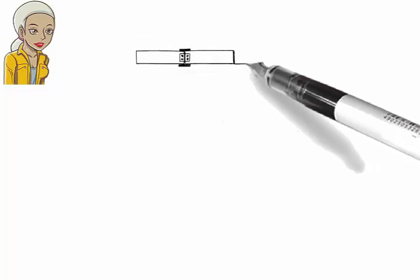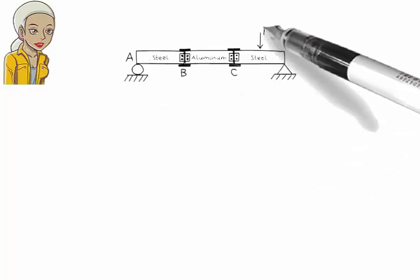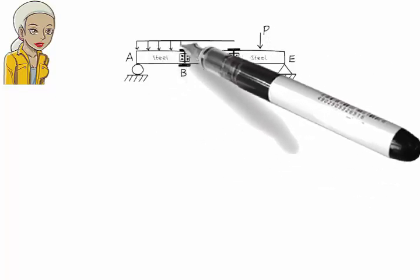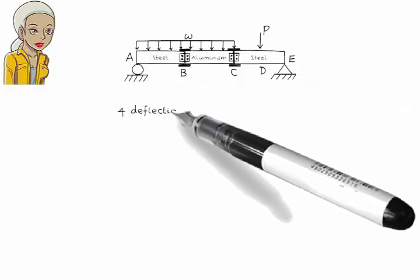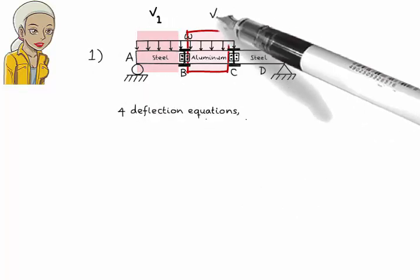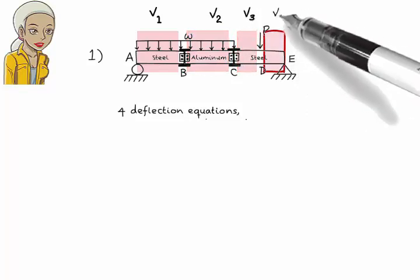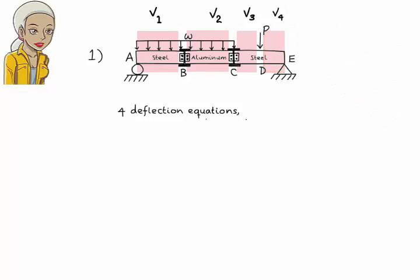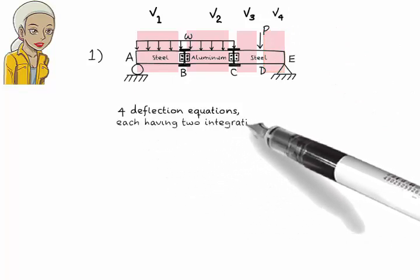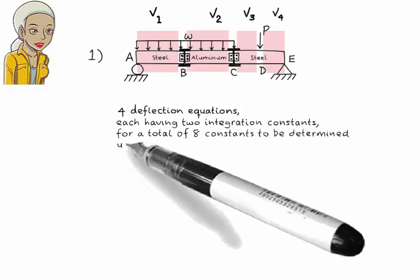Solution for Problem 1. We need 4 deflection equations for this beam. Since each equation has 2 integration constants, we need a total of 8 boundary equations.